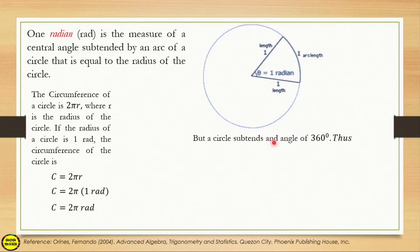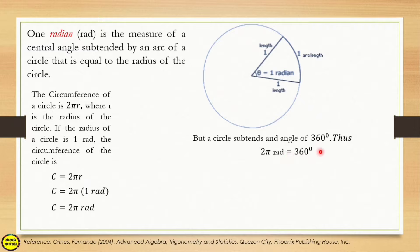But a circle subtends an angle of 360 degrees, so in angle measure the full rotation of the circle is 360 degrees. Thus, we can say that 2π radians is equal to 360 degrees. Now what if we only take π?